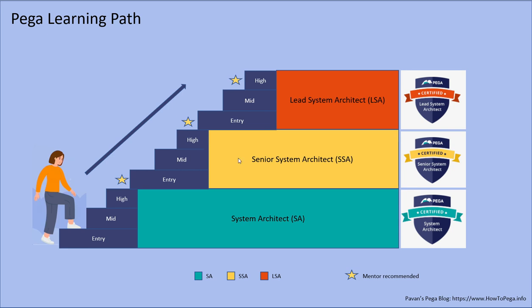Once mastery of the senior system architect role is achieved, moving to entry-level lead system architect is a crucial phase. PEGA PDN has a wide set of courses to take a high-end SSA to an entry-level LSA, and there is a certification available. As of today, it's a three-step process overall — we're not covering that in scope here — but it's recommended that a high-end SSA cover the lead system architect course and then clear the certification.